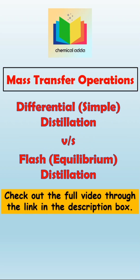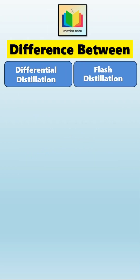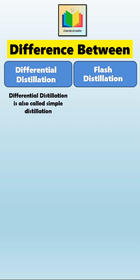What is the difference between differential distillation and flash distillation? Let's start from definition. Differential distillation is also called simple distillation, because it is a batch process where vapor is removed gradually, without the use of a fractionating column or multiple stages.